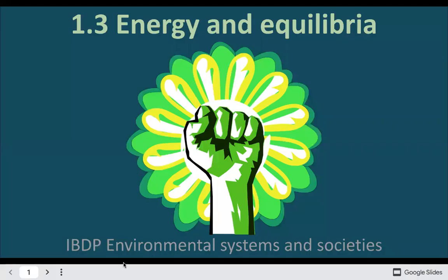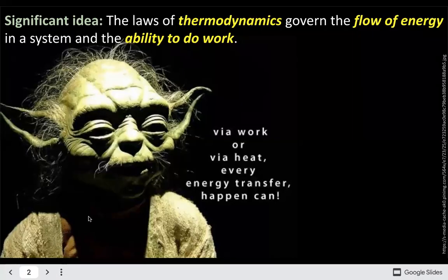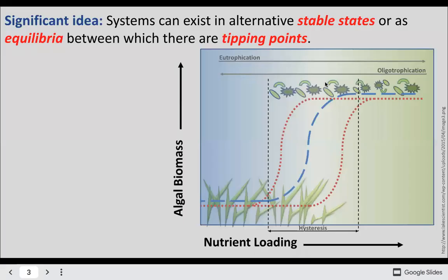Welcome to energy, equilibria, and thermodynamics. The laws of thermodynamics talk about the flow of energy in a system and the ability to do work. These come from physics but we can apply them to ESS in several different ways. We also talk about equilibria — there are different stable states you can exist in, and tipping points which can lead to different ecosystem states.